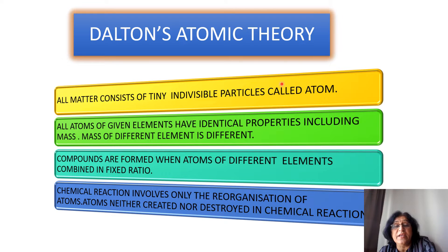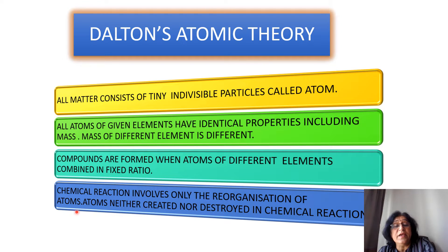All matter is made up of tiny indivisible particles called atom. Atoms of a given element have identical properties including mass, and atoms of different elements have different properties. Compounds are formed when atoms of different elements combine in a fixed ratio — that is the law of definite proportion. Chemical reactions involve only the reorganization of atoms.